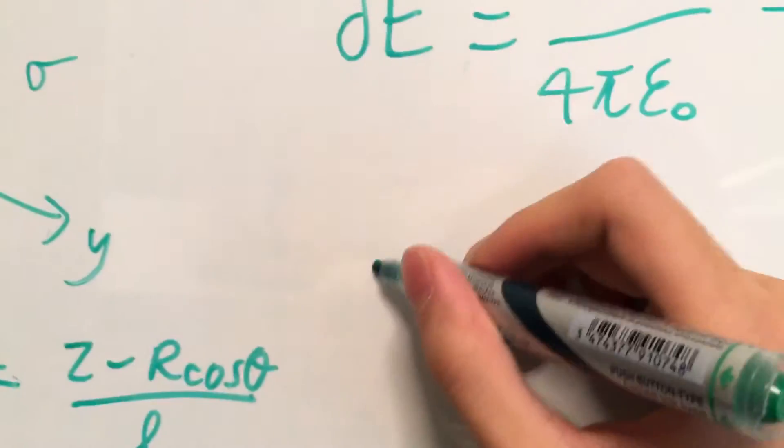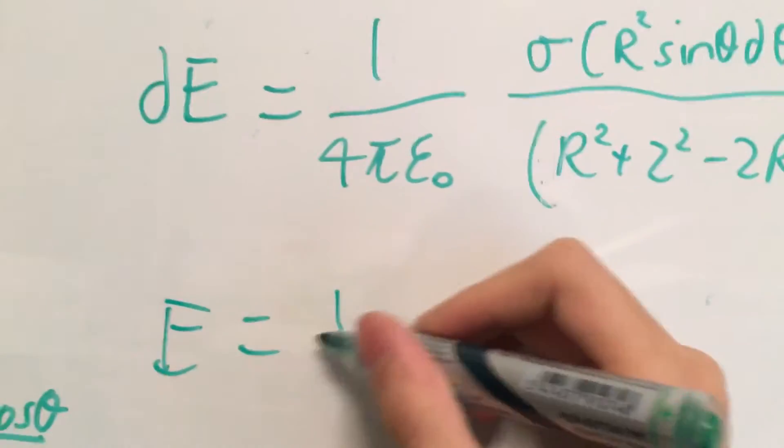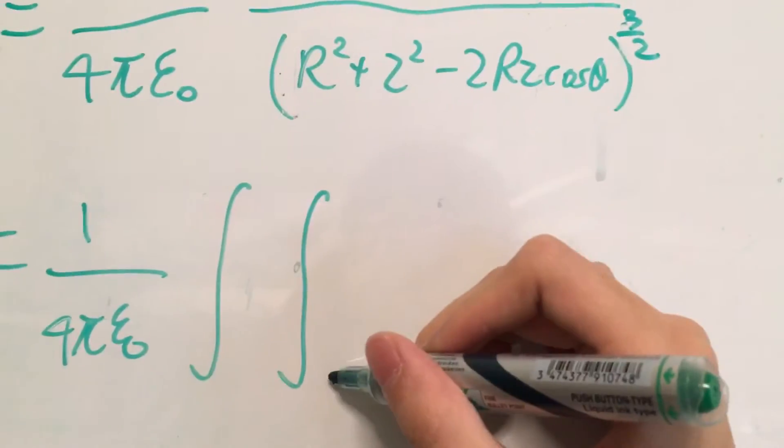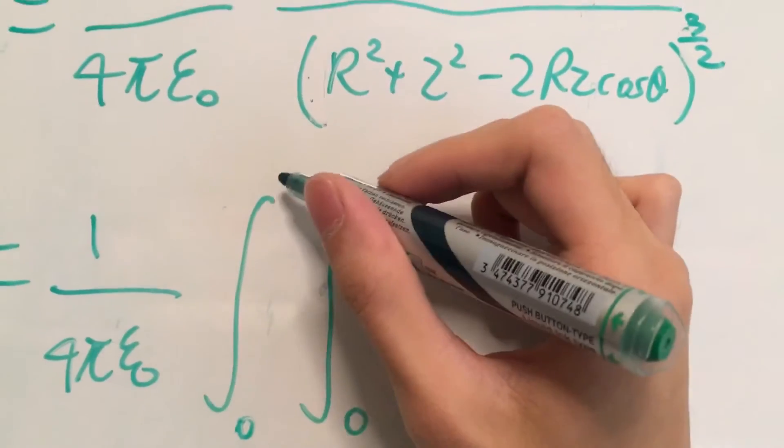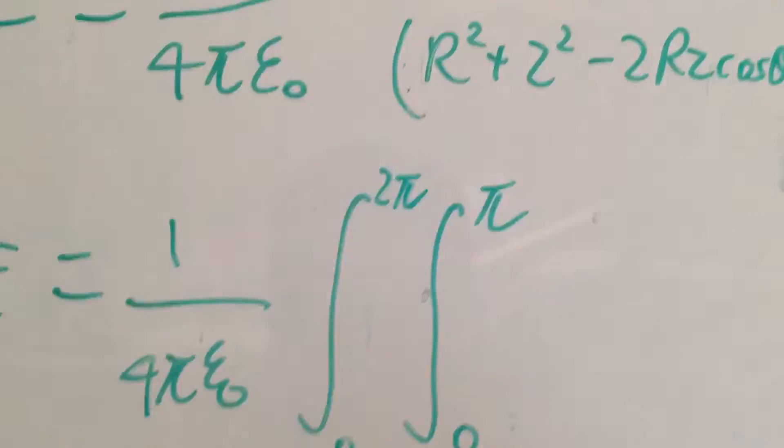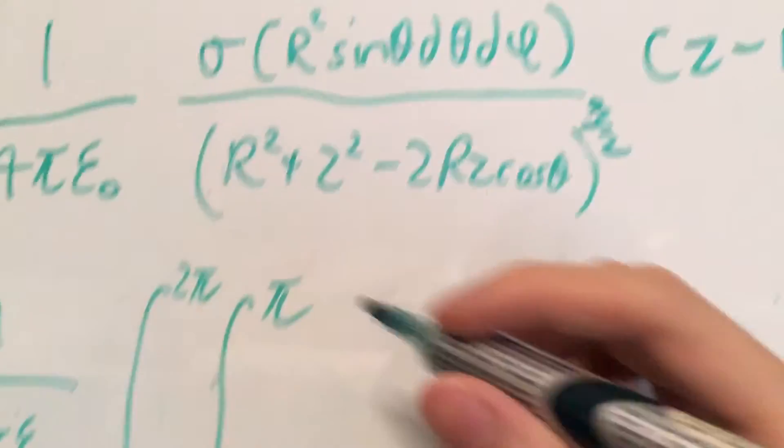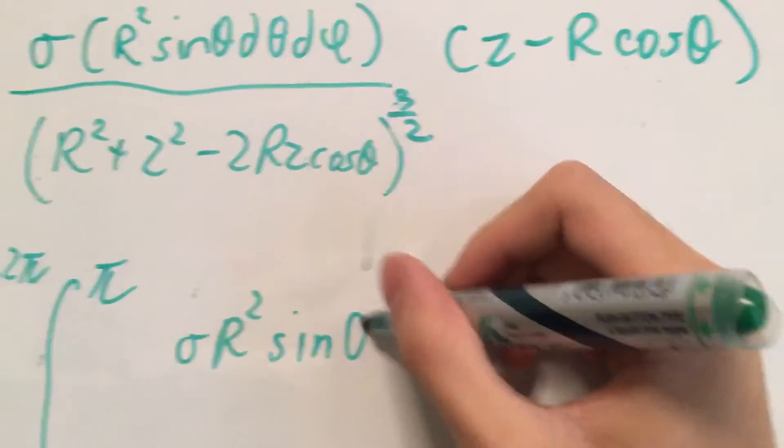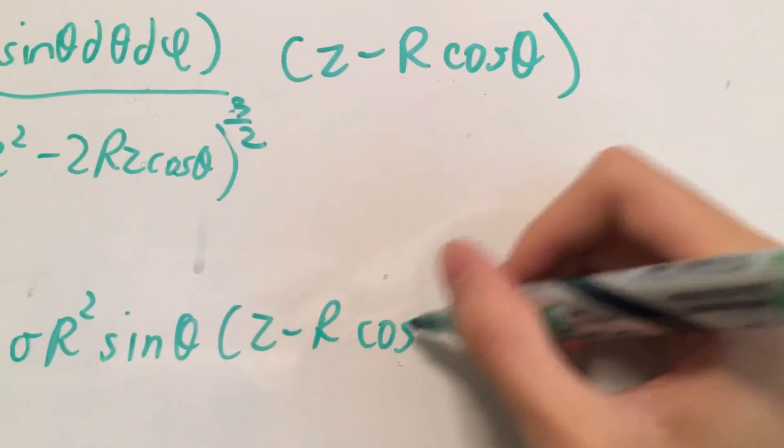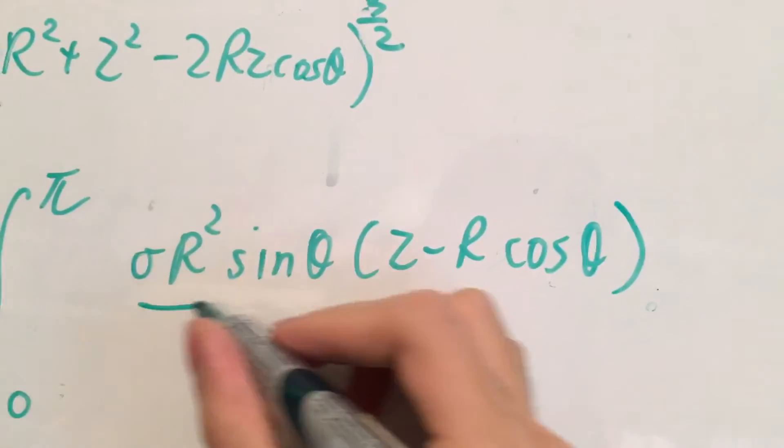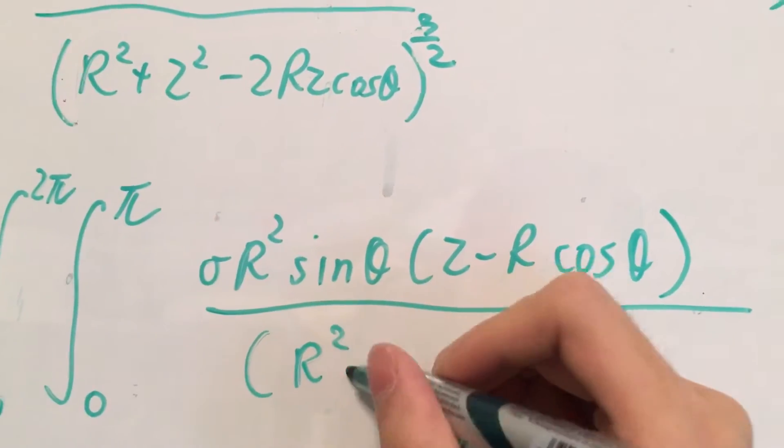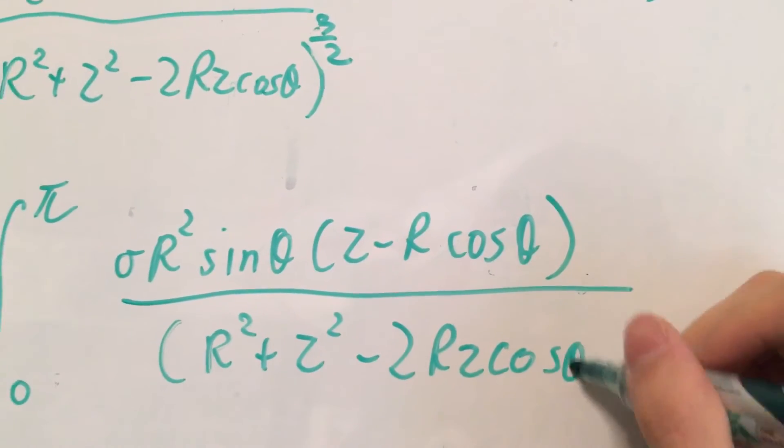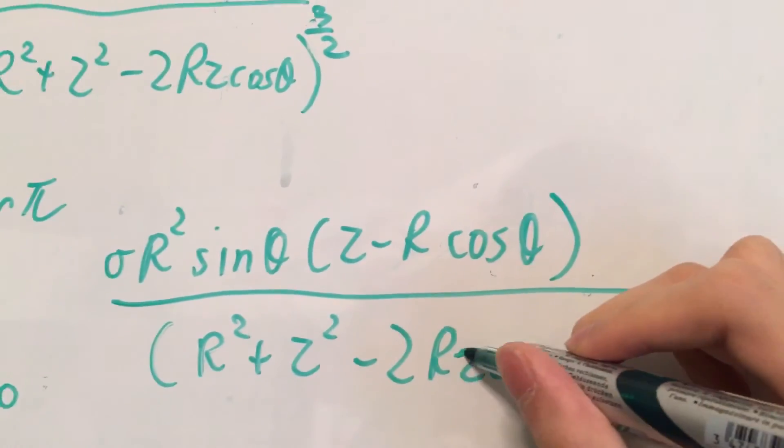And the total amount of field pointing in this direction at this point is what you get when you integrate this twice, from 0 to pi and 0 to 2 pi. I'll tell you what these integrals correspond to later, but let's just copy this down first. r squared plus z squared minus 2rz cosine of theta. Now that's z, you don't mix that up with 2.